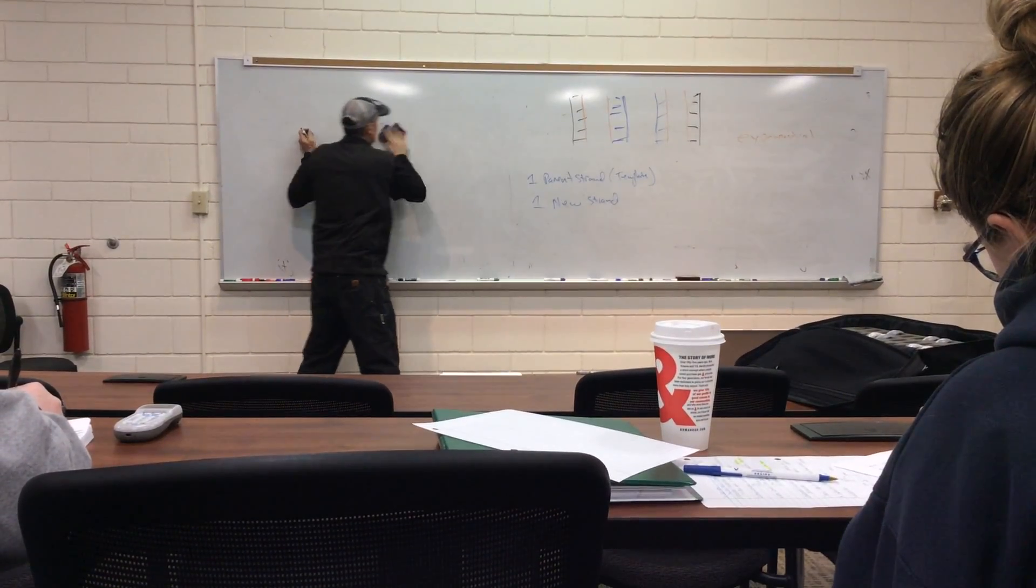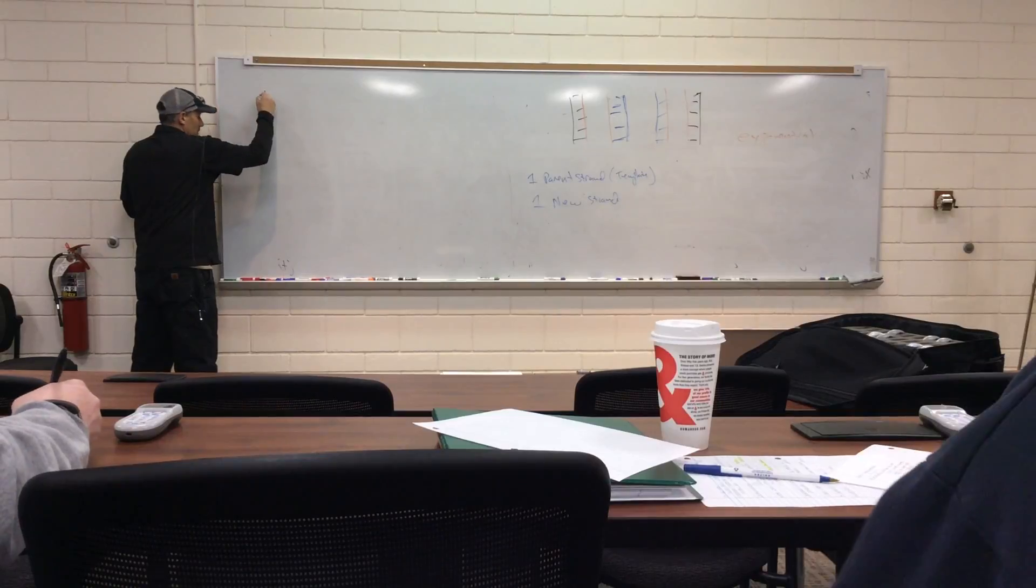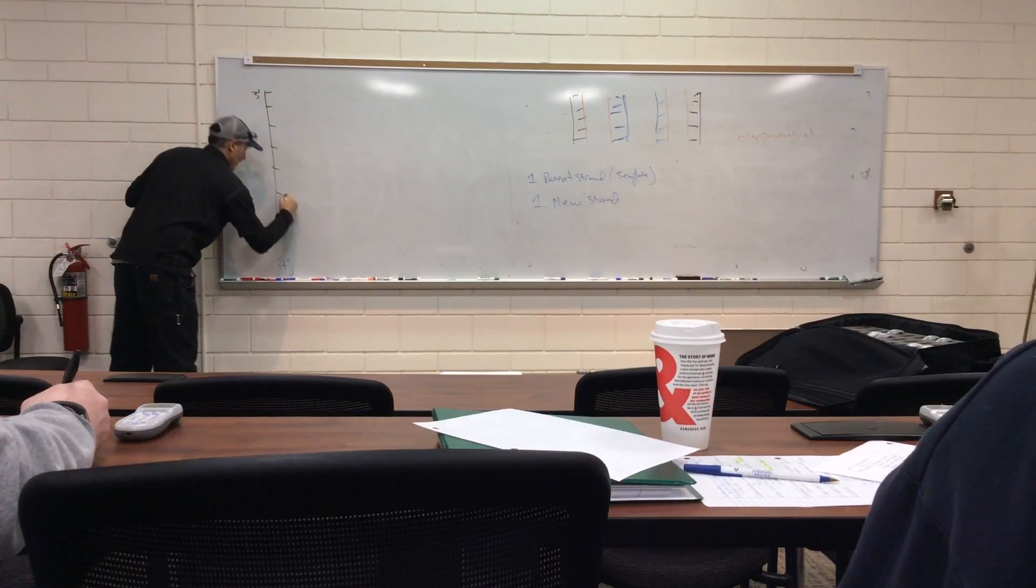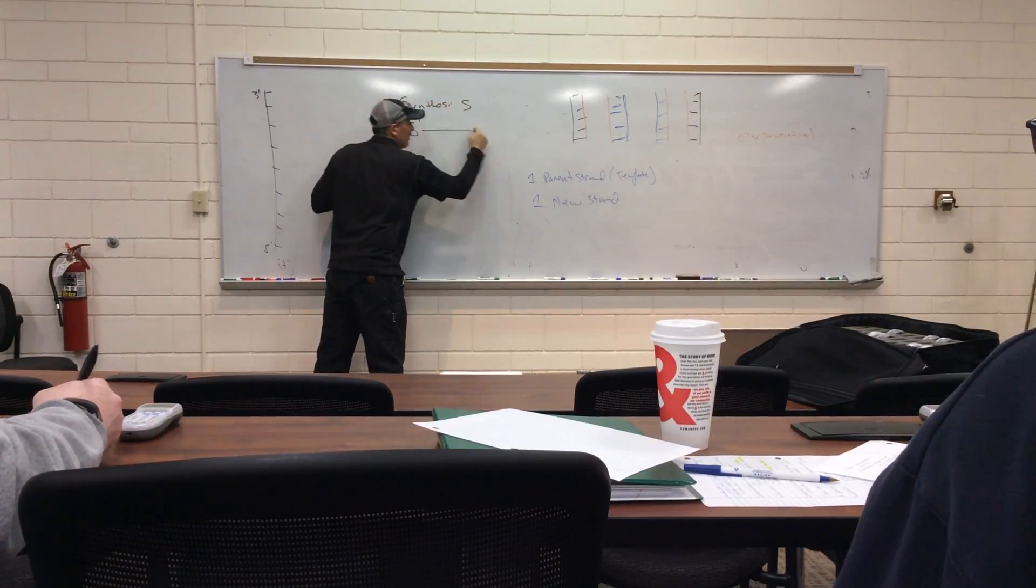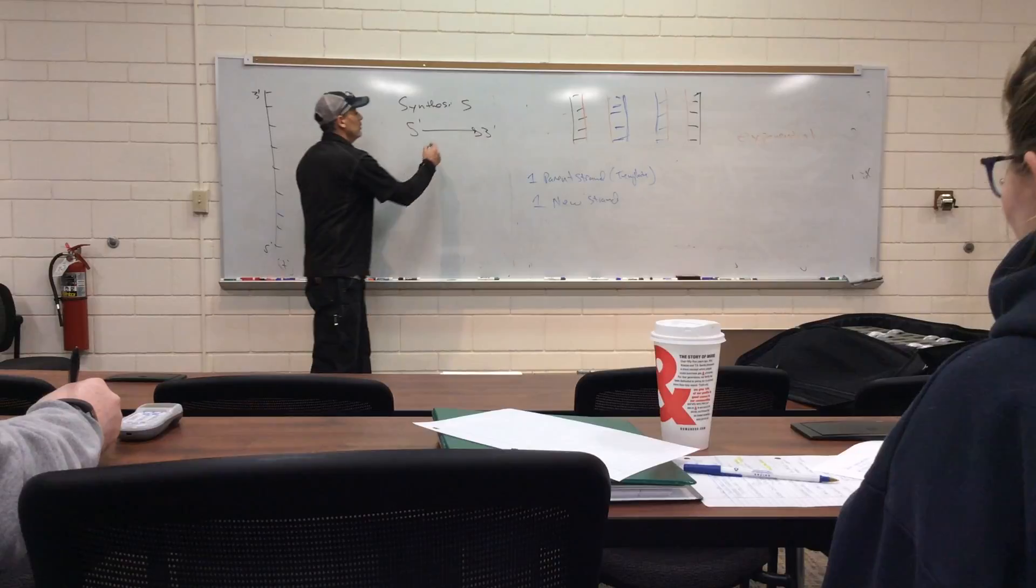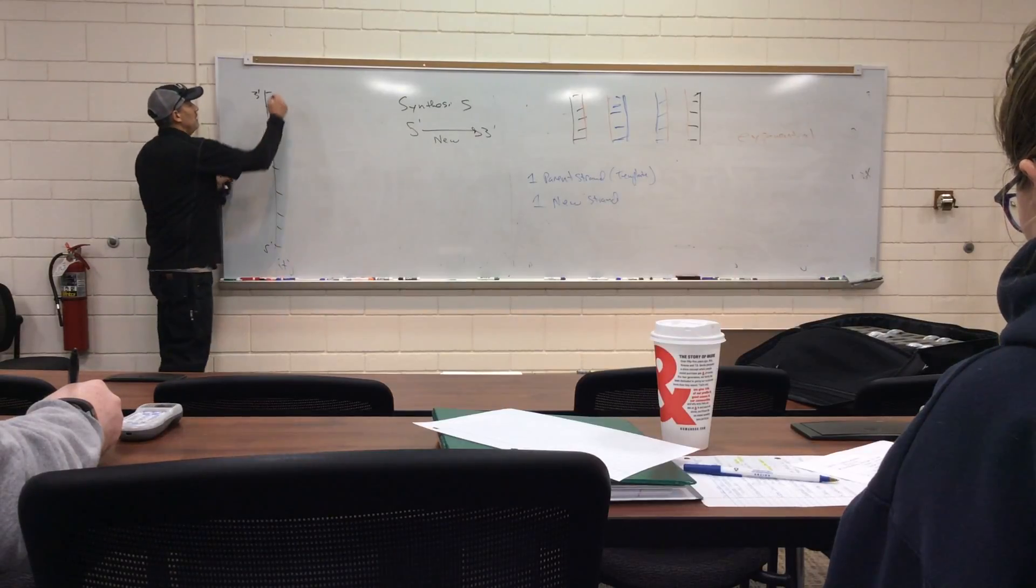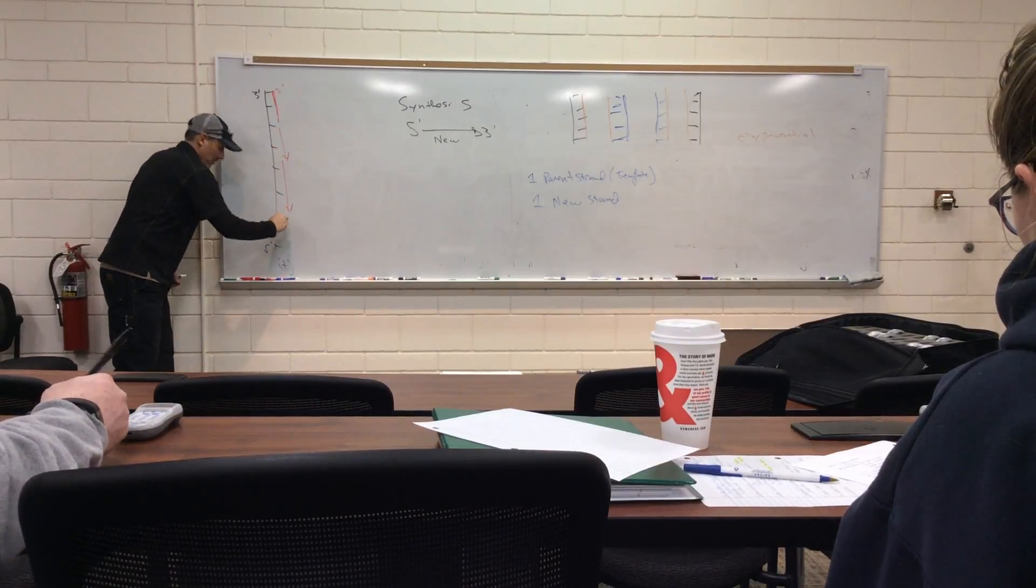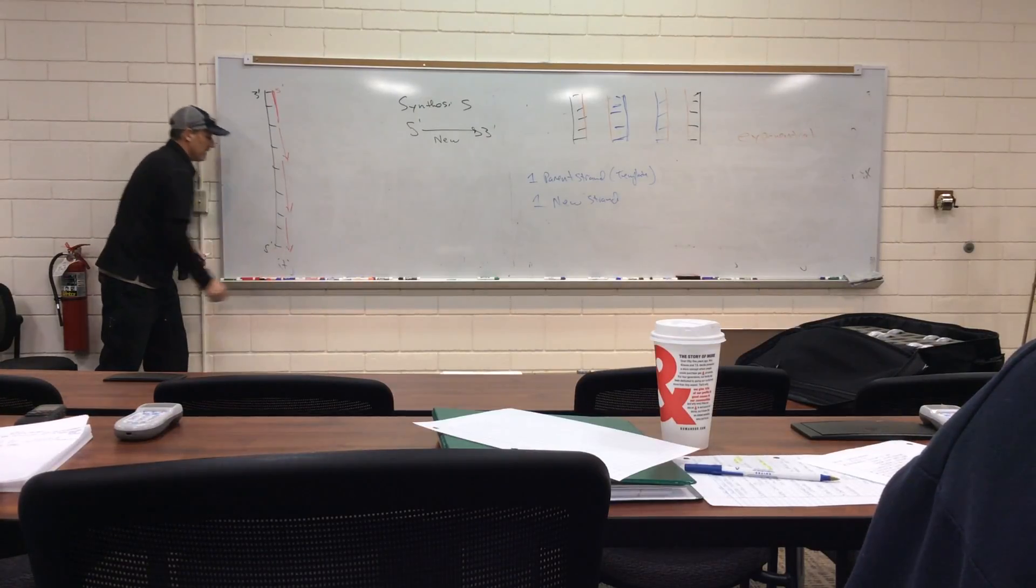It happens in a linear fashion, like we showed with the actual chemistry. If I have my 3 prime and my 5 prime template strand, new synthesis happens in a 5 prime to 3 prime direction. And by 5 prime to 3 prime we mean the new strand, not the template strand. So replication starts at the 5 prime end and moves in that 5 prime to 3 prime direction.